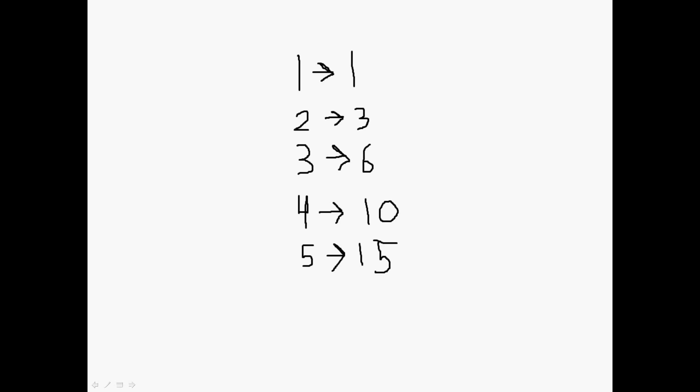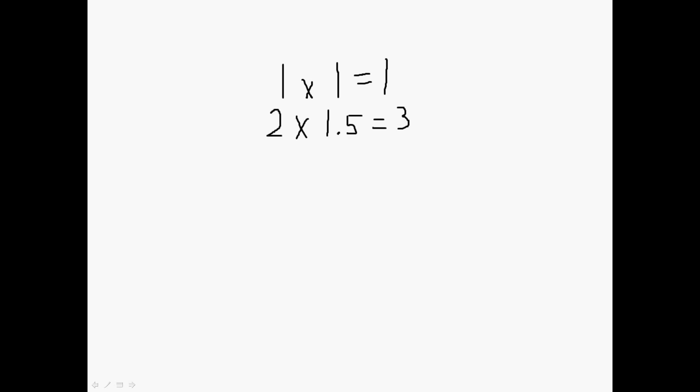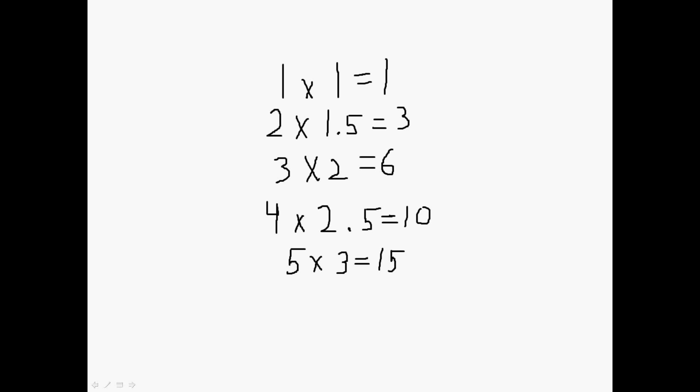The left-hand column would be the input, and it becomes the right-hand column. You'll notice that one times one is one, two times one and a half is three. The left-hand column before the times sign is the row number, and the right-hand column is the output. Then three times two is six, four times two and a half is ten, and five times three is fifteen. This pattern just keeps going, where you add 0.5 to the multiplier every single time you go up.